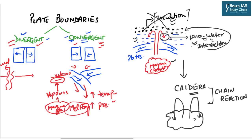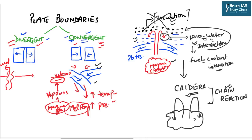This lava-water interaction is what we call fuel-coolant interaction. In the case of Tonga, because it is a convergent boundary, volcanic activity was very intense, the lava-water interaction was weak, the insulating fume did not develop, and in its absence the intensity of the volcanic eruption further rose, leading to the development of a caldera and chain reactions.